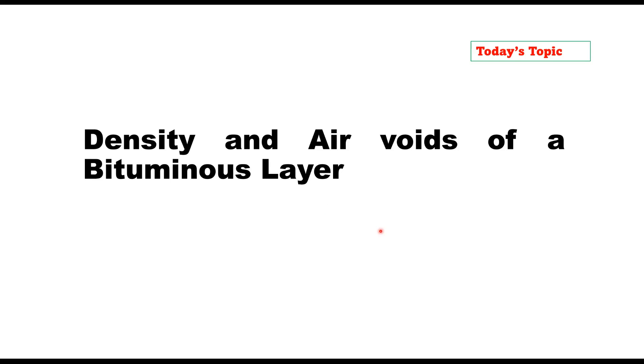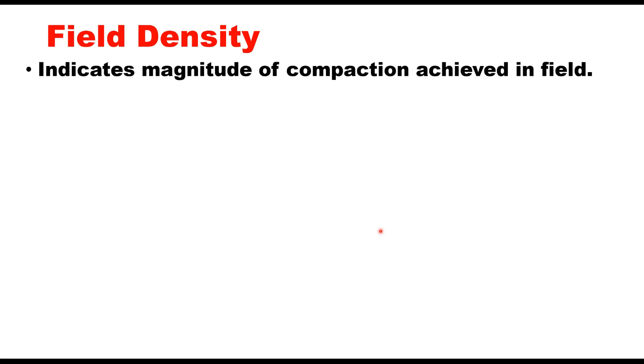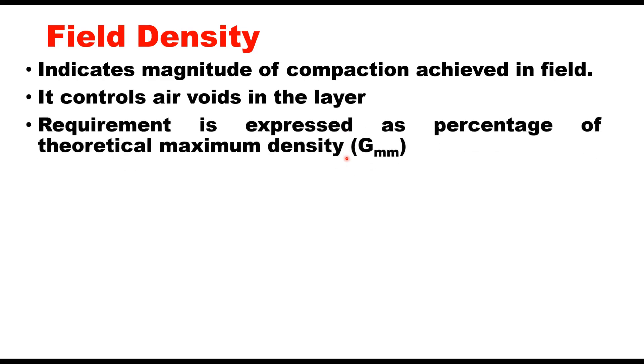Here we need to know the bulk density of the bituminous layer and the theoretical maximum density of the mix. Field density or bulk density indicates the magnitude of compaction achieved in field. It controls air voids in the layer, and the requirement of field density is expressed as percentage of theoretical maximum density.